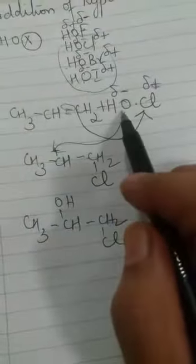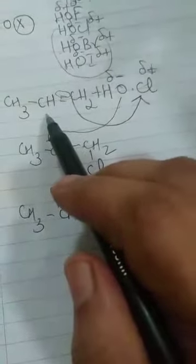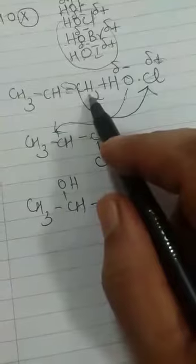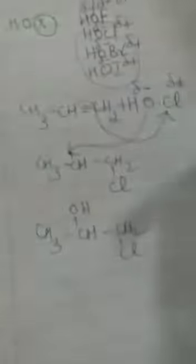Ab yehaan peh ek baat dhyan rakhou. This is exactly Markovnikov's rule. Because negative part of the reagent goes to carbon having less number of hydrogen. And positive will definitely go to the carbon having more number of hydrogen. Okay, so that is how the addition is taking place.